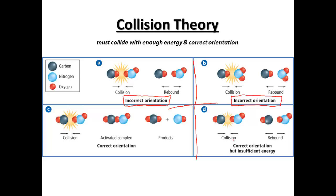And D, correct orientation, but they're not moving fast enough. So again, the electron orbitals repel each other and they bounce back in different directions.